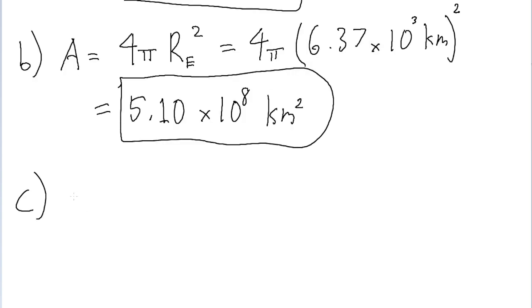Finally, part C asks us for the volume of the sphere. So the formula for the volume of a sphere based on its radius is 4 pi divided by 3, all multiplied by the cube of that radius.